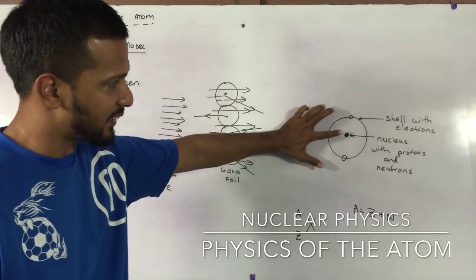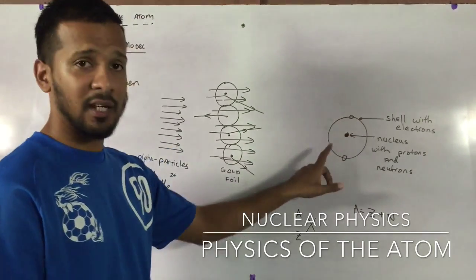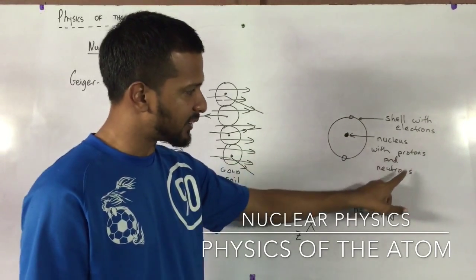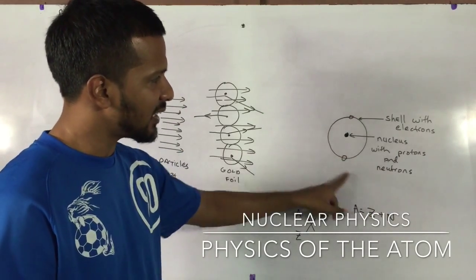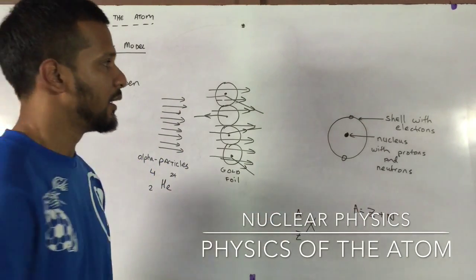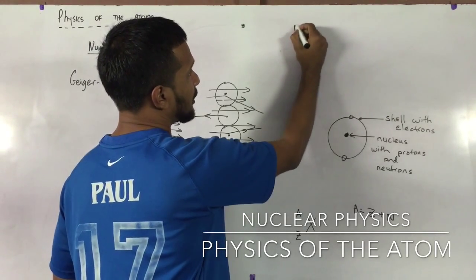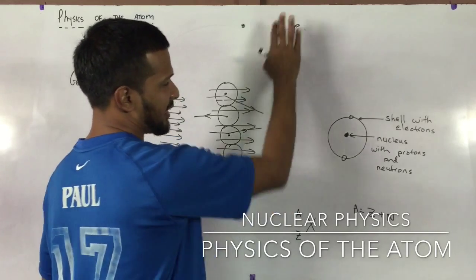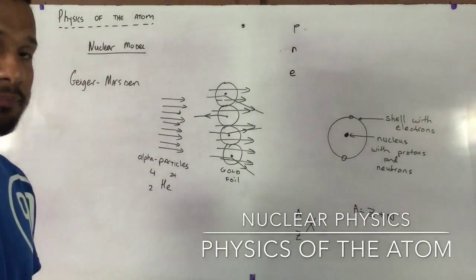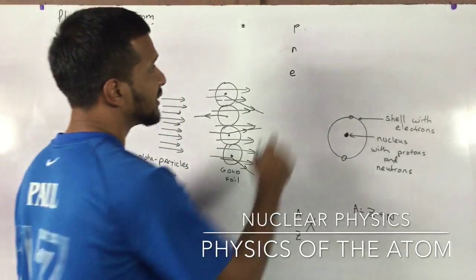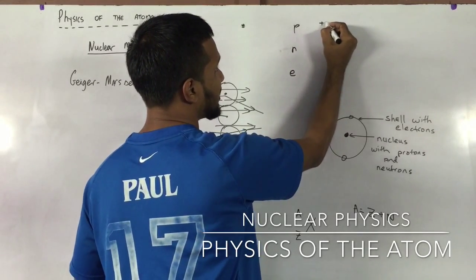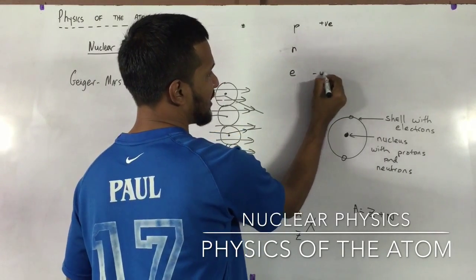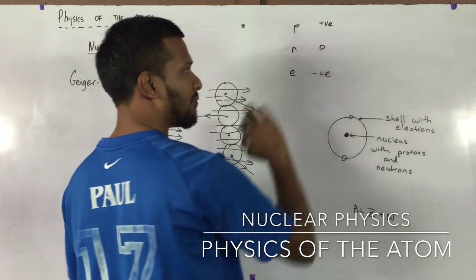And in the nuclear model, there's a nucleus and there's a shell. In the nucleus, there are protons and neutrons. In the shell, there are electrons. These are the three subparticles inside the atom. And the protons have a positive charge, electrons have a negative charge, neutrons have no charge.